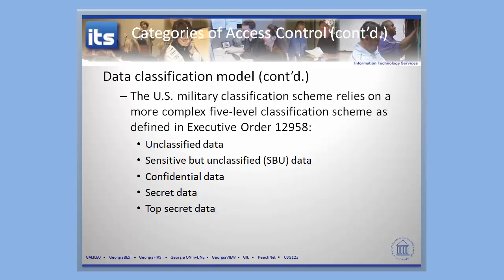Within the University System of Georgia, we actually use a much simpler model. There's a law in Georgia — an open records law — that says most data should be available to the public. Our data classification scheme is based on tier one being everything that is subject to open records. All of those open records are available and I don't really need to protect them too much, because anybody can just write a letter or send an email to gain access. So we don't spend a lot of time there — that information could be on the front page of a newspaper.